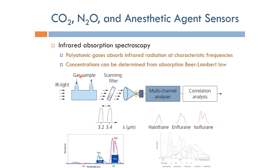The infrared absorption spectroscopy system consists of an infrared light lamp, and we enter the gas sample through a transparent quartz lens. We have a scanning filter that chooses which bandwidth we are going to use in measurement, focusing lenses, and a detector. We can sometimes use a multi-channel analyzer to compute all of them at the same time, and then use the Beer-Lambert Law to compute the concentration of each one.